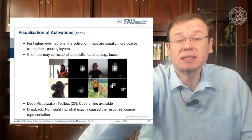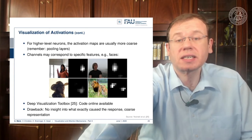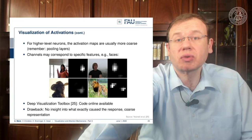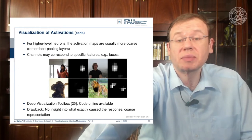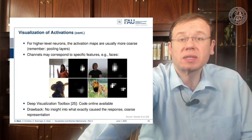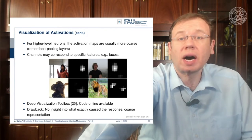Here you see a visualization that may correspond to face detection or face-like features, and then we can start speculating what this kind of feature is actually representing inside the deep network. There's the deep visualization toolbox, referenced in reference 25, which is available online and allows you to compute things like that. The drawback is of course that we don't get precise information about why that specific neuron was activated or why this feature map takes this shape.